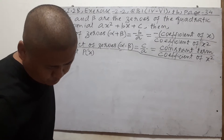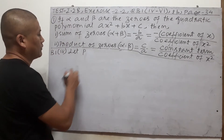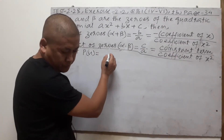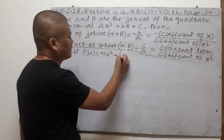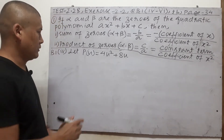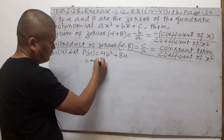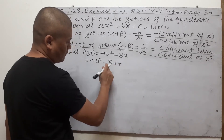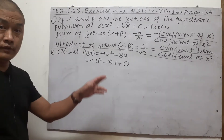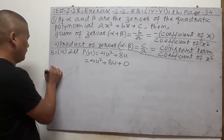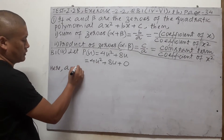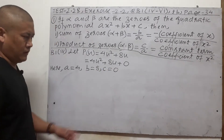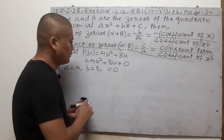Let p of u — the variable this time is u, not x — so p of u is equal to the given polynomial: 4u² + 8u. Let's manipulate this a little. The u² term is here, just like x² and x. There is no c term, so we put zero: 4u² + 8u + 0. This gives us: a (coefficient of u²) = 4, b (coefficient of u) = 8, and c = 0. We put zero to account for the value of c.